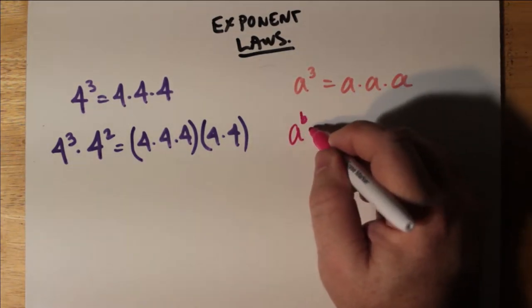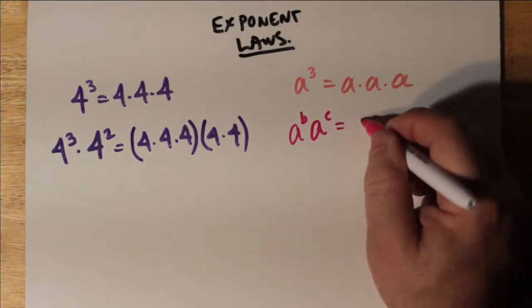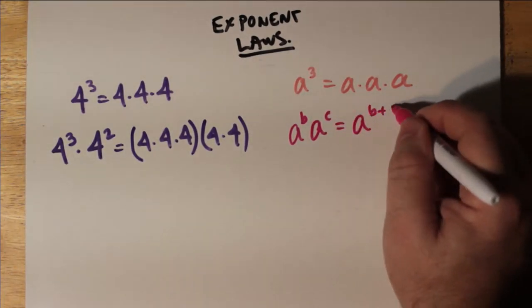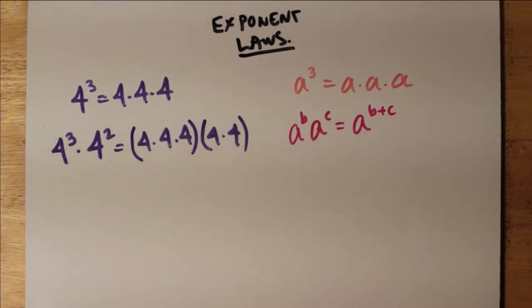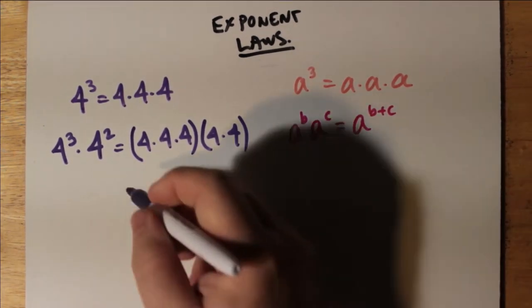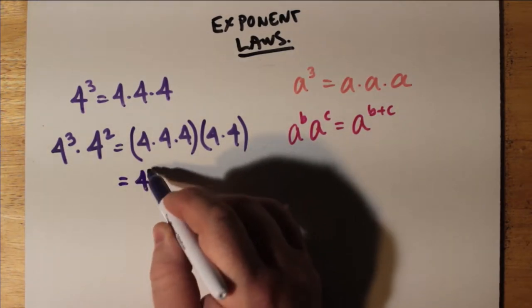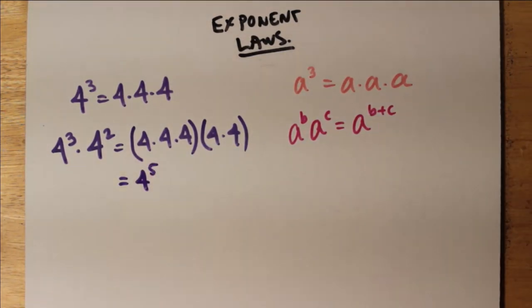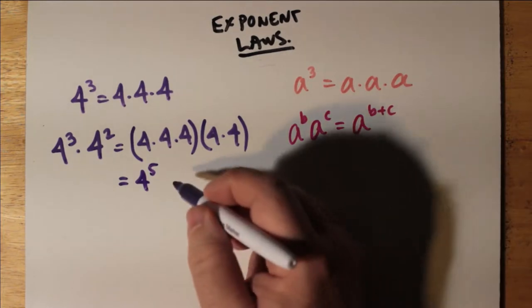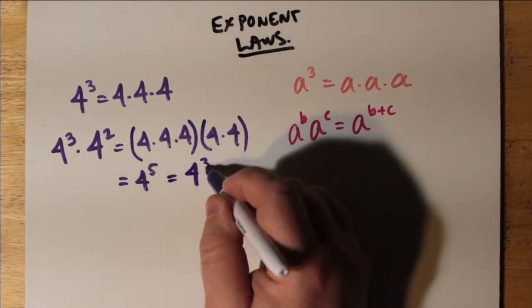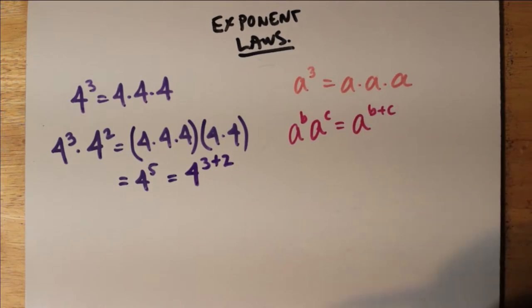For a to some exponent times a again to some other exponent, we just add the exponents, b plus c. a to the b times a to the c is just a to the b plus c. So here, where I just said that we have 4 cubed times 4 squared gives us 4 multiplied by itself 5 times, so that's 4 to the 5th, which is the same as saying 4 to the 3 plus 2.